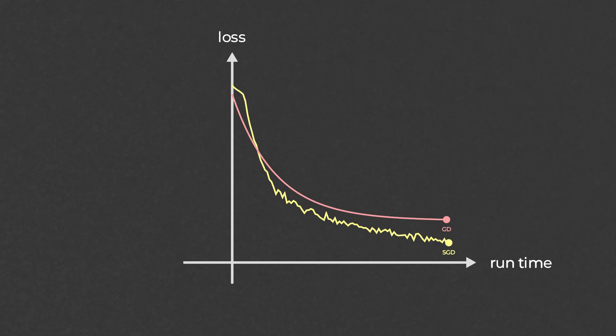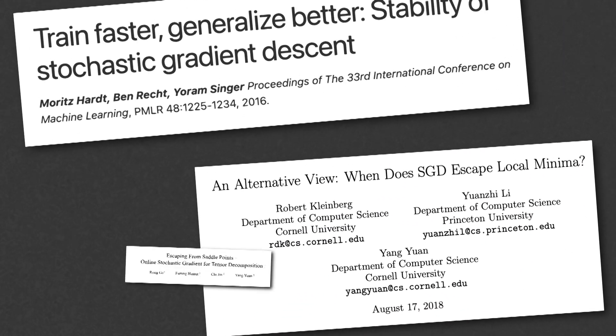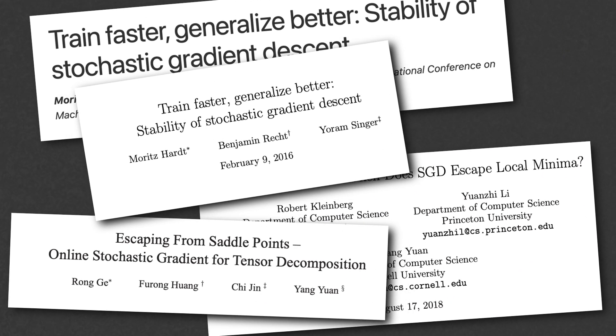What is surprising is that in practice, Stochastic Gradient Descent not only catches up with vanilla gradient descent, but it often finds better solutions. And this should come off as a complete surprise, if anything using an inaccurate method should lead to suboptimal solutions. In the last few years, there has been an explosion of publications that try to give partial answers to this phenomenon.